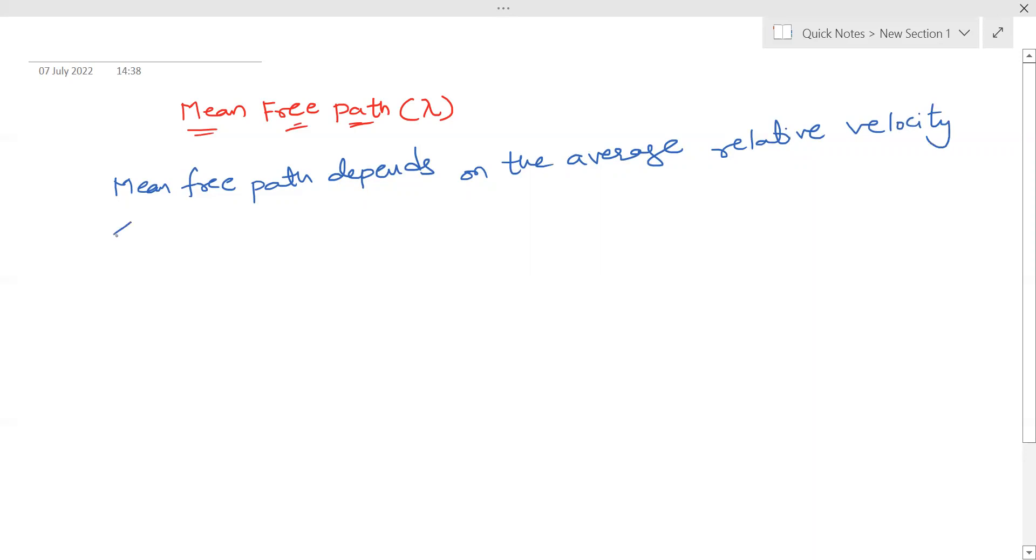So here the average value—this notation represents the average relative velocity, or it can also mean the expected value of relative velocity or the mean value of the relative velocity.